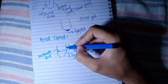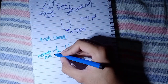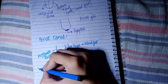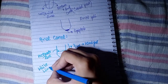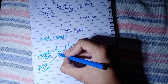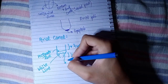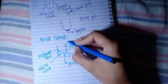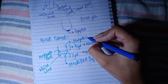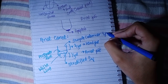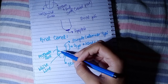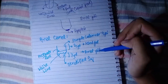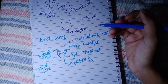The pectinate line separates the hindgut-derived portion from the anal-pit-derived portion of the anal canal. About 2 cm above the opening of the anal canal is the white line. Below the pectinate line toward the white line, the epithelium is stratified squamous. Above the pectinate line, the epithelium is simple columnar, because it is derived from the hindgut endoderm.